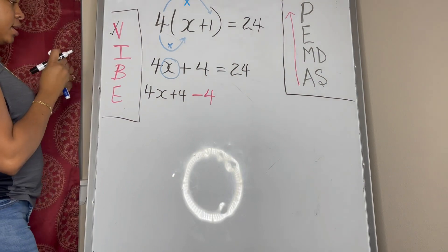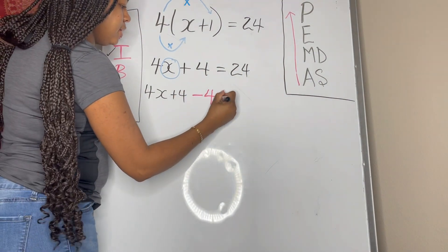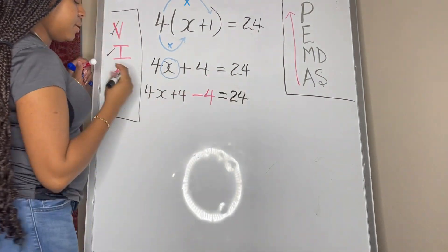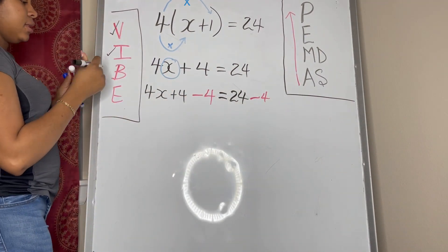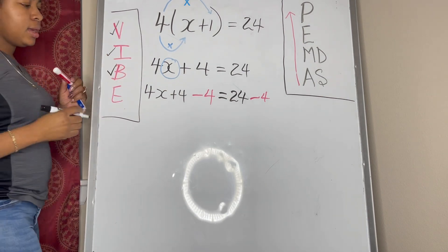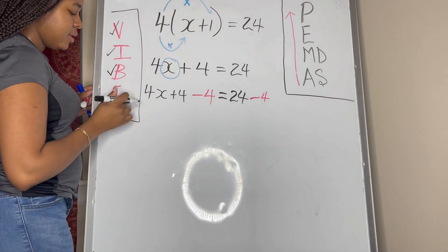So here we go, we have 4x plus 4, and to undo the addition you subtract four. And of course, since we did that to this side, we also need to balance it by subtracting four from the other side as well.